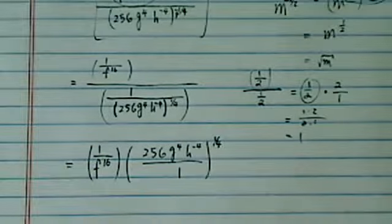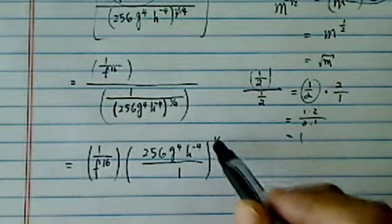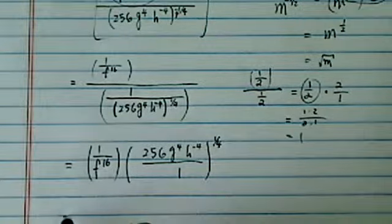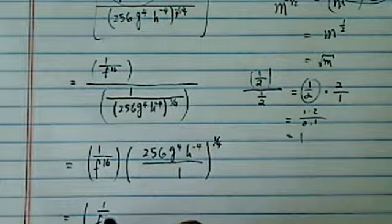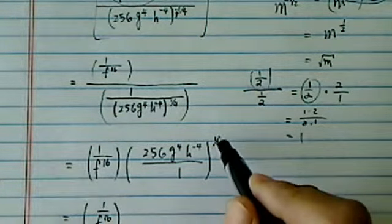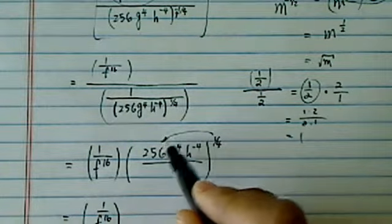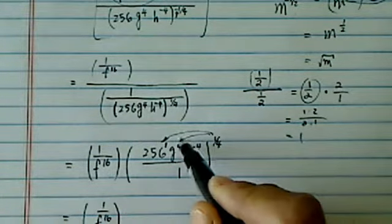Doesn't that look a lot better now? I'm going to change this one into positive, and this one into positive. Let's leave this one alone. What we're going to do is deal with this quarter. I'm going to distribute a quarter to each one of them.